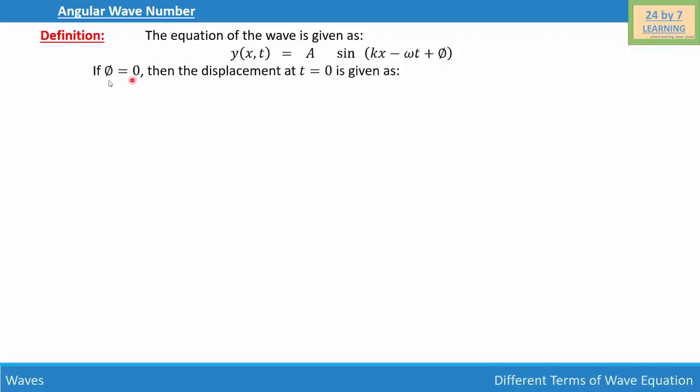If phi is equal to 0, which simply means that if the phase angle is equal to 0, then the displacement at time t equals to 0 is given as y(x,0) is equal to A sin kx.